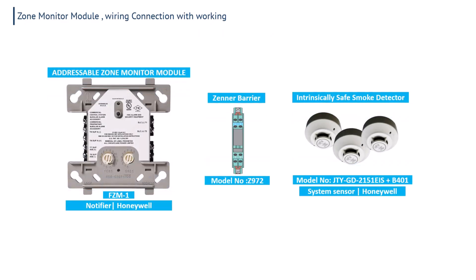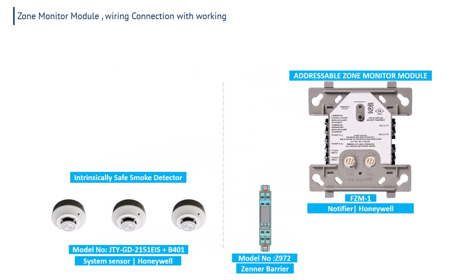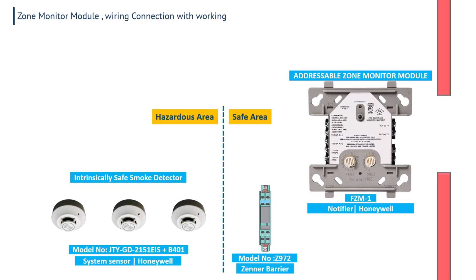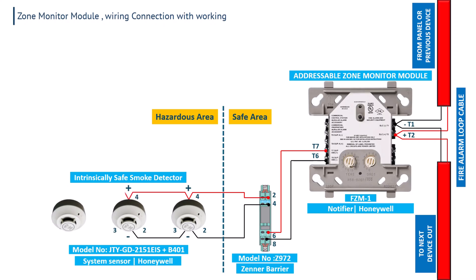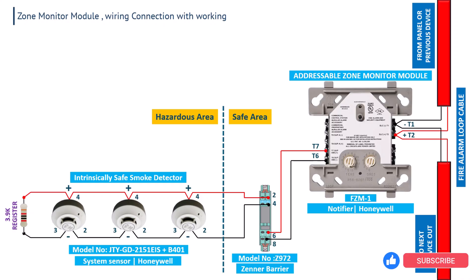When there is a hazardous area, an IS detector is always installed there. We will now understand the wiring connection between the IS conventional detector and the Notifier zone monitor module FGM1. The fire alarm loop wire is connected to the T1 and T2 terminals. The channel barrier is connected to the T7 and T6 terminals — positive wire to T7 and negative wire to T6. The zone cable of the conventional IS detector is connected to the channel barrier. The conventional detector is installed in the hazardous area, while the channel barrier and zone monitor module are always installed in safe areas. In hazardous areas, devices are given low voltage — this is generally done by converting from 24V DC to low voltage.